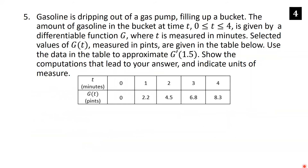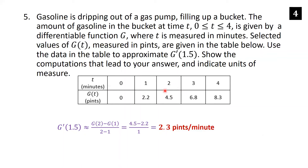Gasoline is dripping into a bucket; the amount G(t) (in pints) at time t (in minutes) for t ∈ [0, 4] is given by a differentiable function with selected values in a table. Approximate g′(1.5): since 1.5 is between 1 and 2, use the secant line through (1, 2.2) and (2, 4.5). So g′(1.5) ≈ (4.5 − 2.2)/(2 − 1) = 2.3 pints per minute.